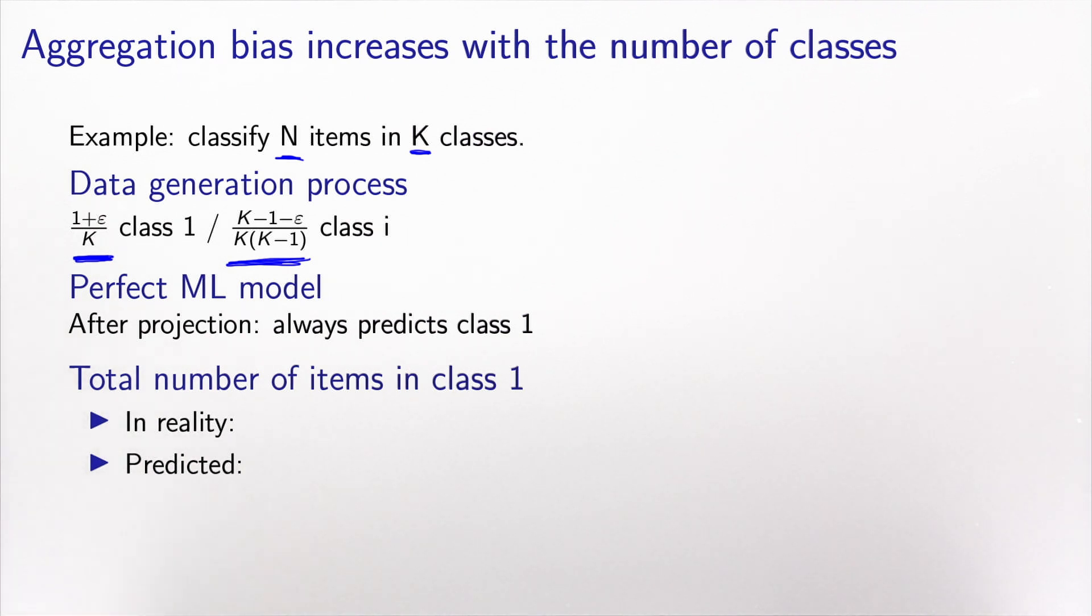Again, suppose the machine learning model is perfect, so it's able to reproduce exactly the data generation process. But we apply this projection where we select the highest probability class to be the true class. So in reality, the number of items in class one would be N times the probability. But the predicted one using our perfect machine learning model with the projection would be capital N. And here you see that the error will increase with the number of classes, capital K.